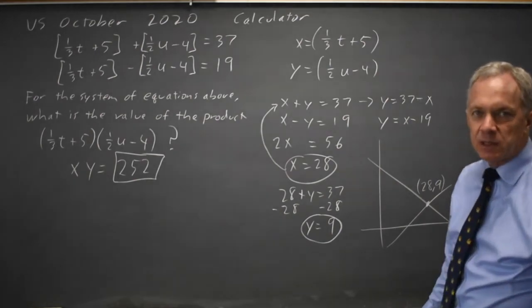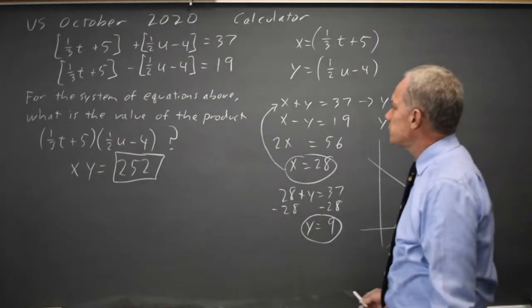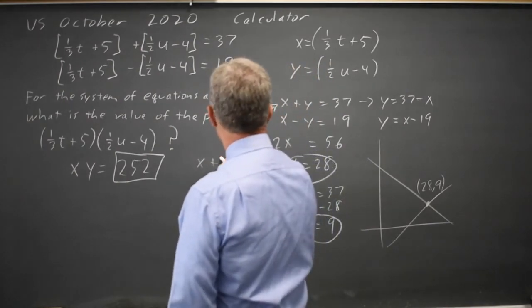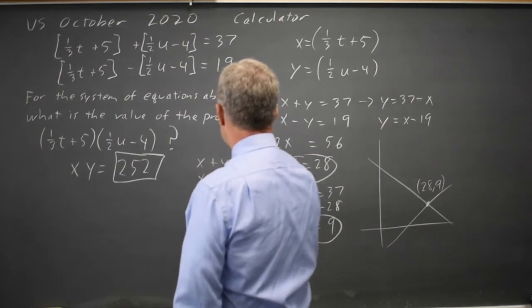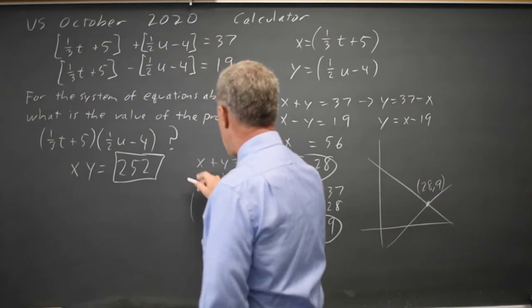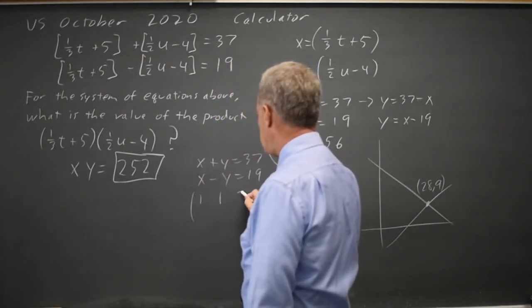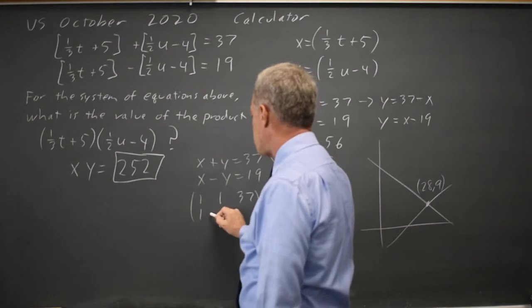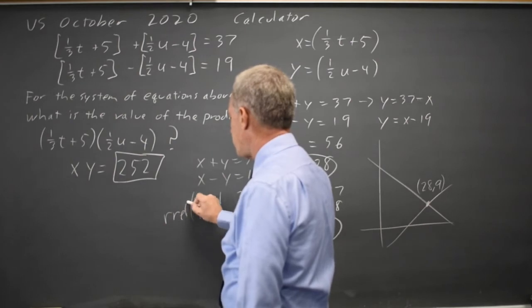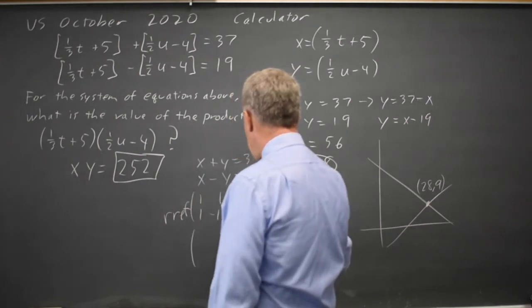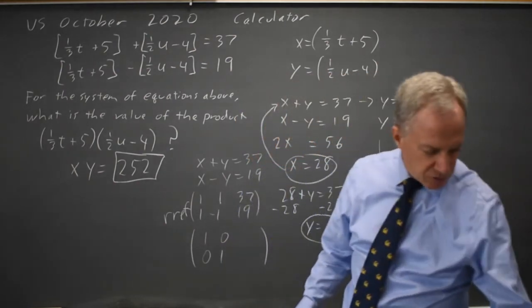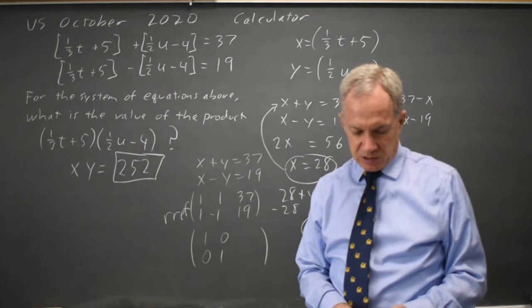Same answer I got by hand. I can also use matrices if I take the system x plus y equals 37, x minus y equals 19. The corresponding matrix is 1x gives me 1, 1y gives me 1 equals 37, 1x negative 1y equals 19. And if I take reduced row echelon form of that matrix, if there is a solution, I'll get something with 1, 0, 0, 1,